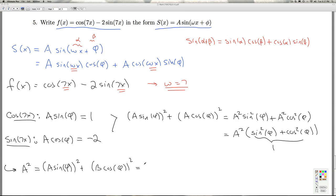Now A sine φ we know is 1 and A cosine φ is negative 2. So this gives me A squared is 1 plus 4, which is 5. And so we can choose A to be plus or minus radical 5. In this case we'll choose the positive radical 5. So this is giving us the amplitude of this is square root 5.